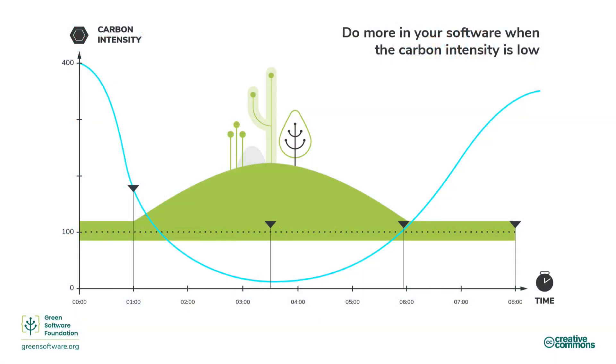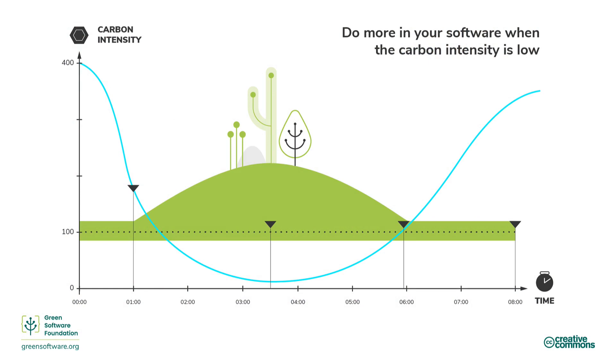If you can both time and location shift you get the best carbon reductions overall, but that's very challenging. You can also just adjust the behavior of your application — not moving it through space or time, but just limiting functionality when electricity is dirty. This is called demand shaping.